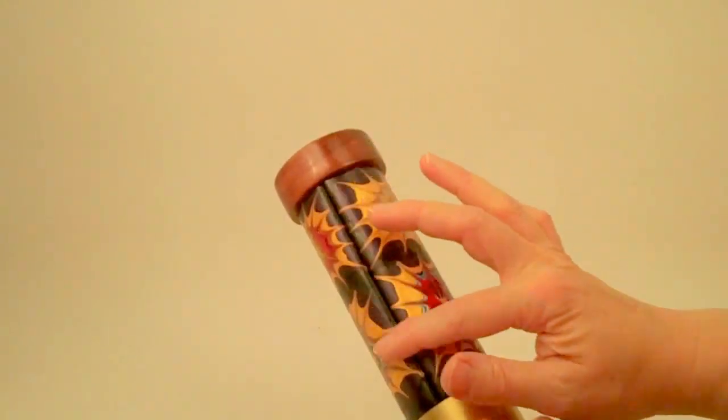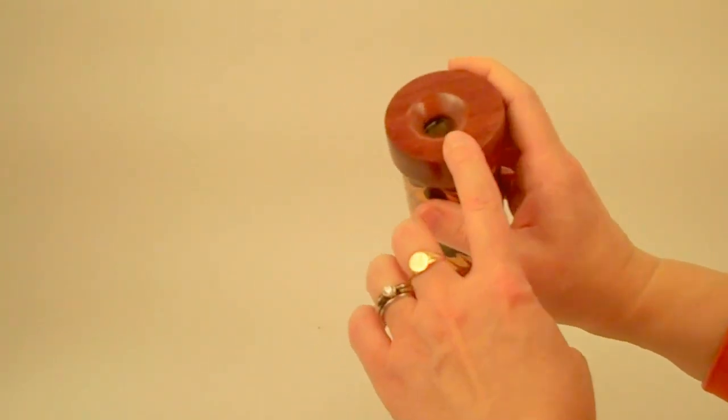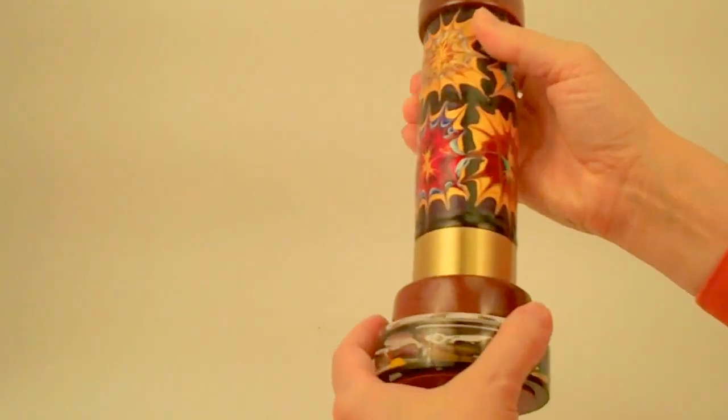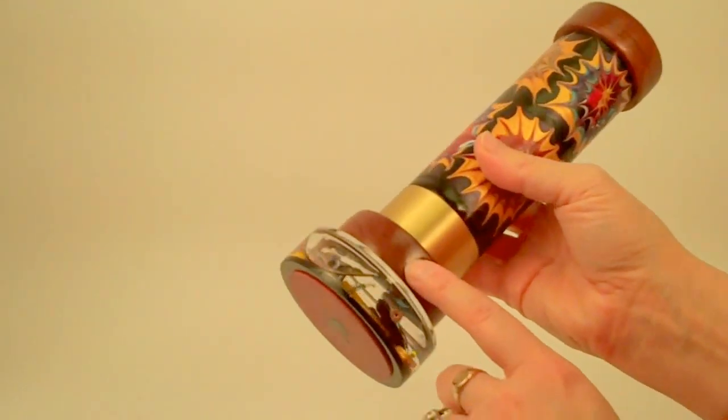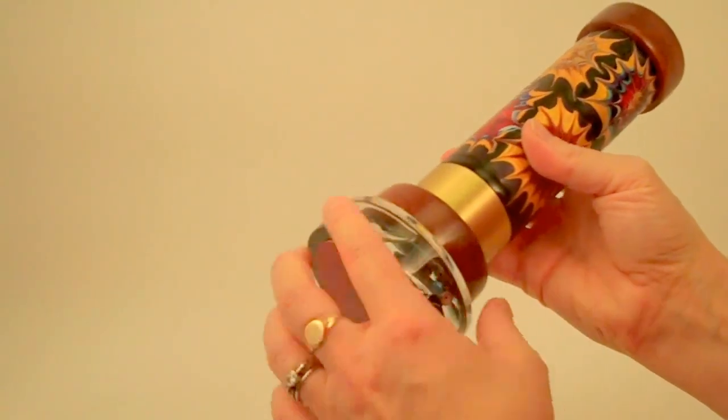They then use the painting and bind that around the barrel of the kaleidoscope. They use fittings at the eyepiece of gorgeous bubinga wood, as well as by the object chamber, and anodized aluminum in this beautiful gold tone as well.